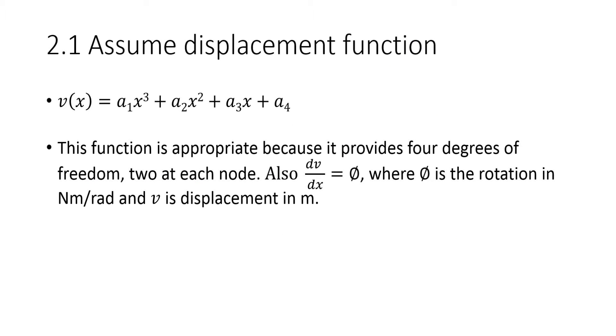First we introduce an assumed displacement function. I chose a third degree polynomial and this function is appropriate because it provides four degrees of freedom, two at each node. Also, the derivative of the displacement function is the rotation, which is in Newton millimeters per radian, and V is the displacement in meters. We are going to use this function to apply boundary conditions.